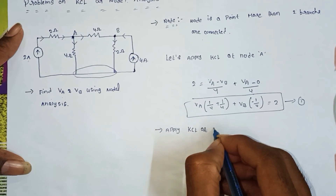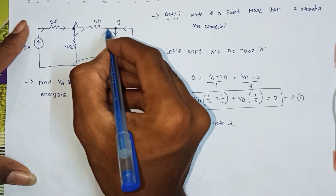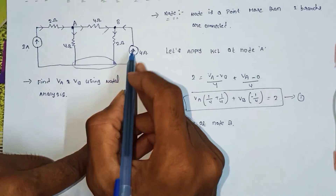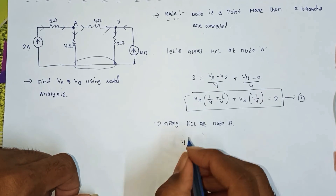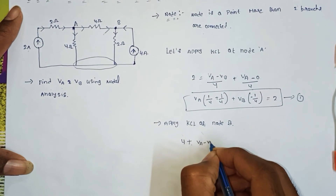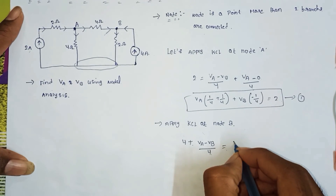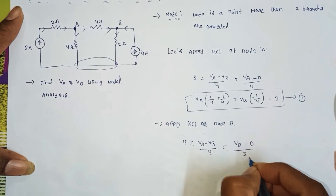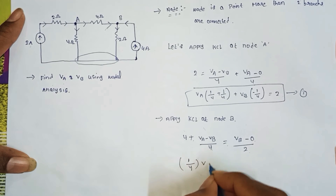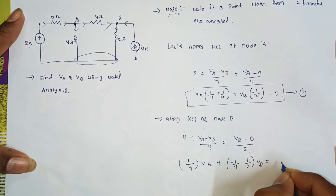Now apply KCL at node B. Here the current entering node B includes the 4-amp source and the current through the 4-ohm resistor from node A: 4 plus (VA minus VB) divided by 4. The leaving current is VB divided by 2. Simplifying: negative (1/4) VA plus (1/4 plus 1/2) VB equals minus 4. This is equation 2.